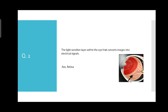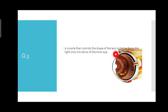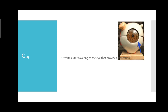The answer is the ciliary muscles, which control the shape of the lens. Question number four: the white outer covering of the eye that provides protection. The answer is the sclera.